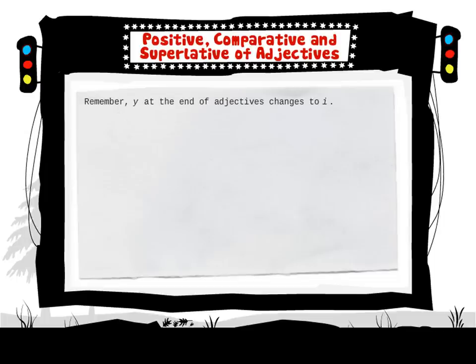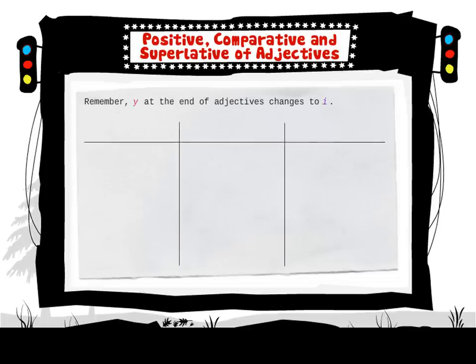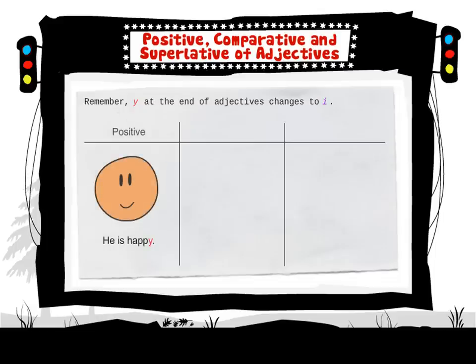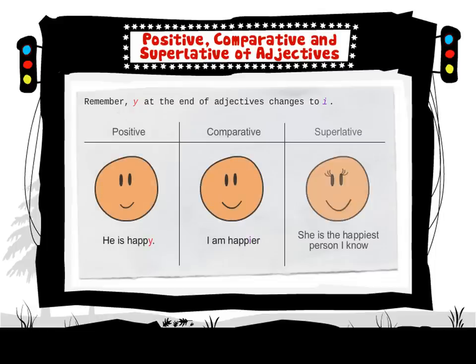Remember, Y at the end of adjectives changes to I. He is happy. I am happier. She is the happiest person I know.